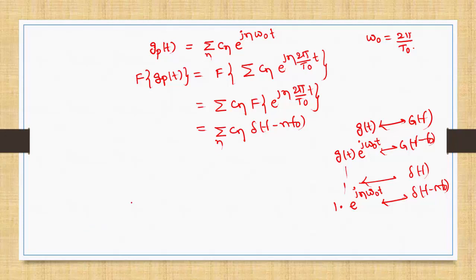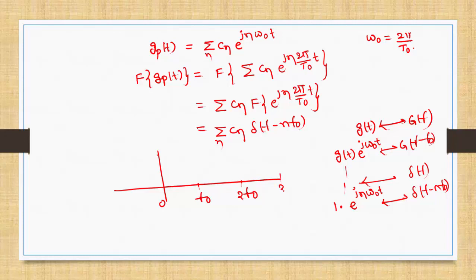The conclusion is: for a periodic signal, the Fourier transform consists of impulses at discrete frequencies. For example, at frequencies 0, f0, 2f0, 3f0, the magnitudes are C0, C1, C2, and so on. The same applies for negative frequencies. Therefore, the Fourier transform of a periodic signal is discrete in nature.